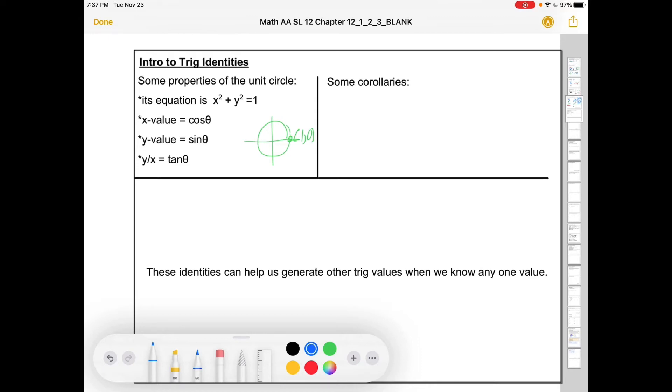So here's one of them. If y over x is tangent, and y is sine, and x is cosine, then tangent can take this definition. Meaning that the real building blocks of trig are just the two ratios of sine and cosine. You can get away with just those two.